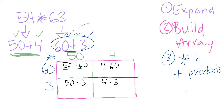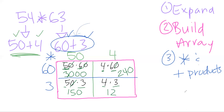Let's solve each one. 5 times 6 is 30 with two zeros — that's 3,000. 4 times 6 is 24 with one zero — that's 240. 5 times 3 is 15 with one zero — that's 150. And 4 times 3 is 12 with no zeros — just 12. Now let's add up our four products to get the final answer.